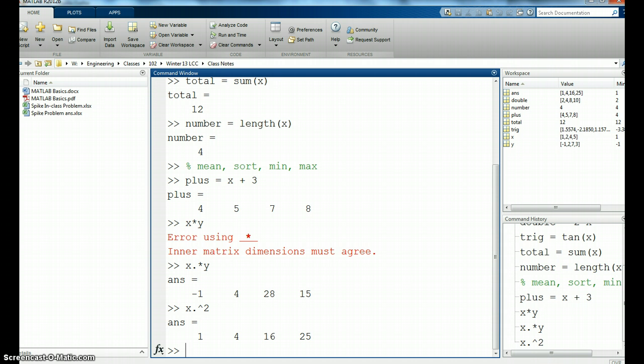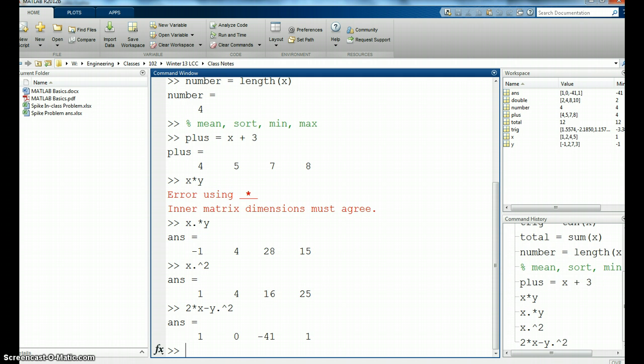So now we can do algebraic expressions. We can do something like 2 times x. Remember, 2 is a scalar, so I can do that. I can subtract, no problem. Don't need a dot for that. Y squared. So let's say 2x minus y squared. Well, with the y squared, now I need the dot.